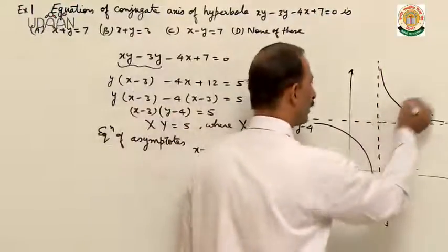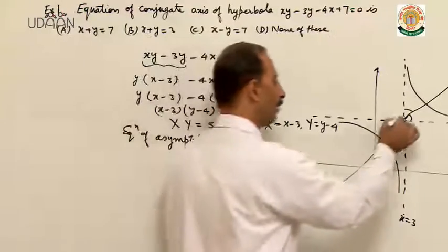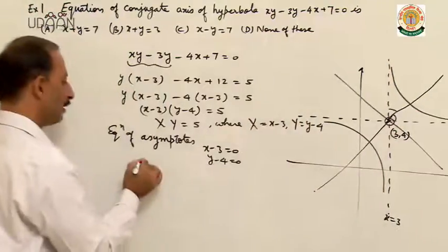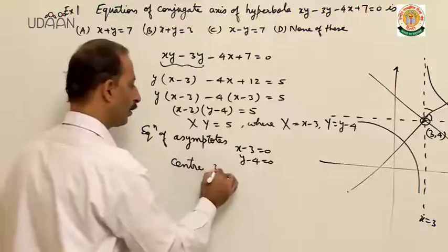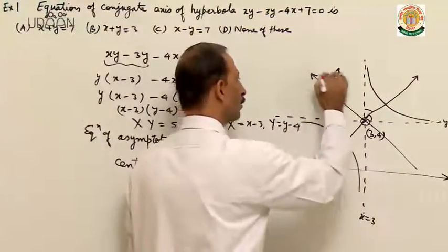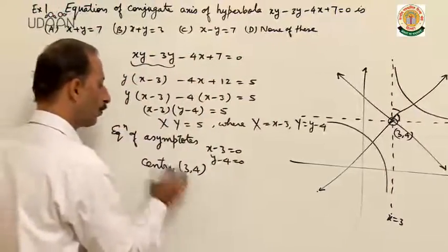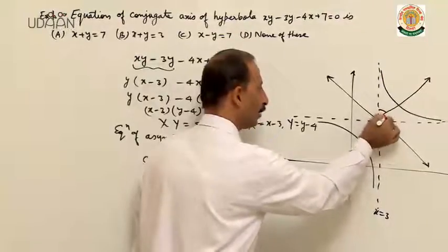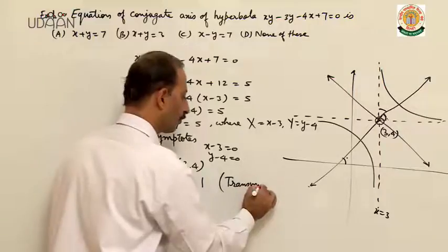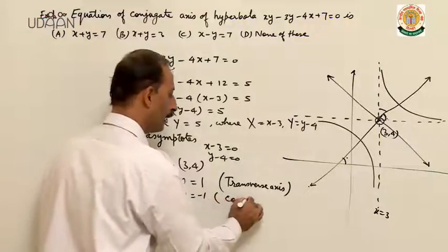The axes are bisectors of this angle. The conjugate axis passes through the center. What is the coordinate of the center? 3, 4. These are the transverse axis and conjugate axis. This angle and this angle are the same, total angle 90 degrees, so each will be 45 degrees. Therefore, slope of transverse axis is 1 and slope of conjugate axis is minus 1.